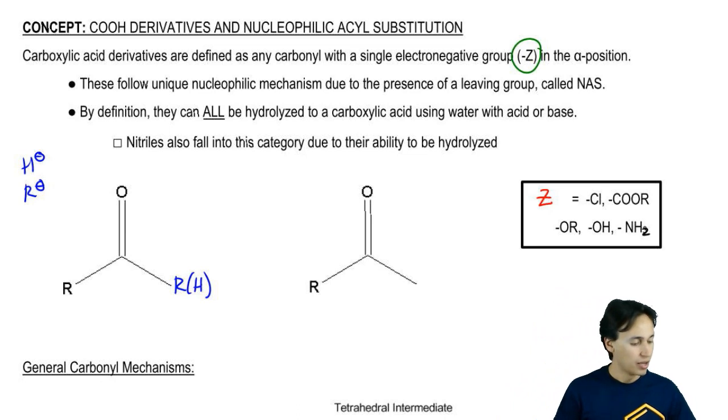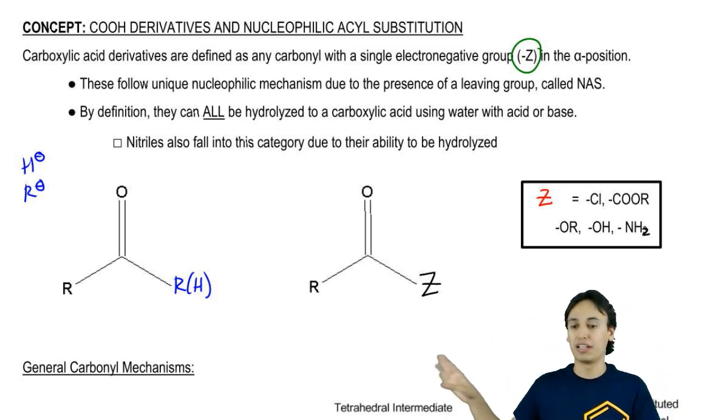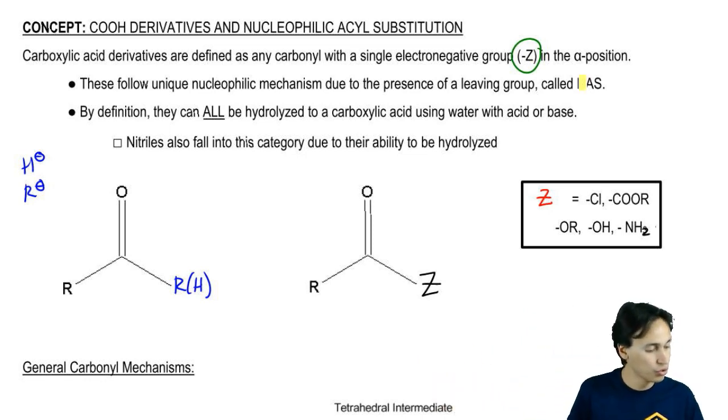It turns out that by definition, these Z groups are going to allow these carbonyls to follow a new mechanism that's different from the mechanism that we would see in a ketone and aldehyde called NAS or nucleophilic acyl substitution.